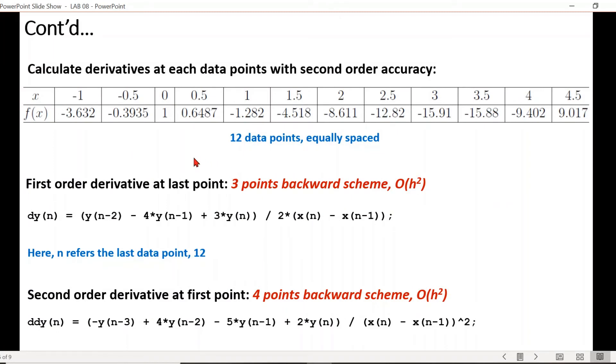Now to estimate the first-order derivative at the last point having second-order accuracy, we cannot use the forward method since there are no data points ahead of this point. So we use the backward difference scheme considering three points so that the order of accuracy is 2 for the first derivative. The same goes for the second derivative where to maintain second-order accuracy, we need four points in the backward direction. As you can see in reference here, the length of the data points which is 12 for our example, and its last point.